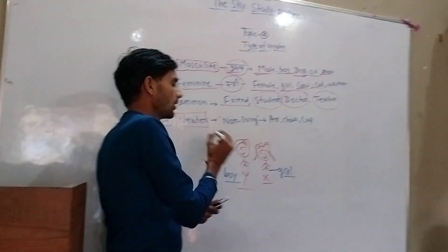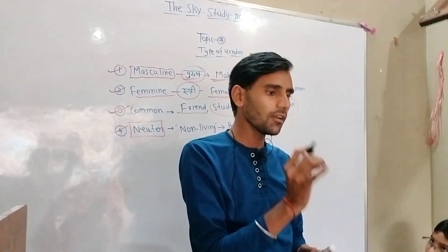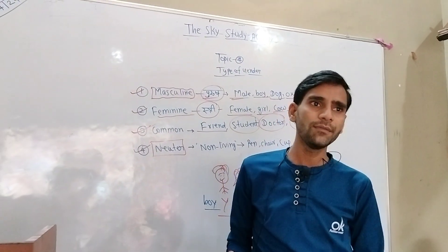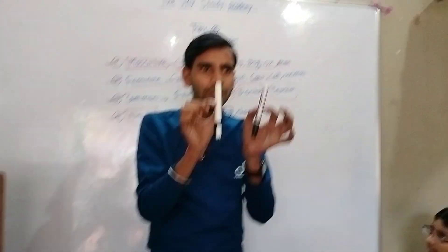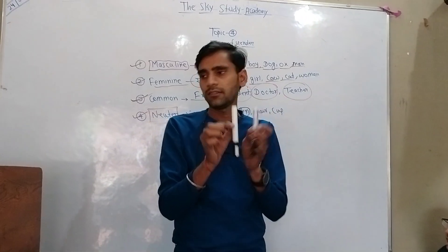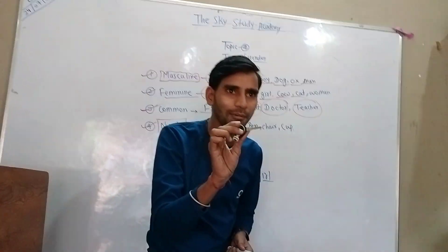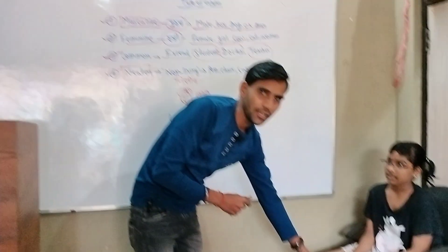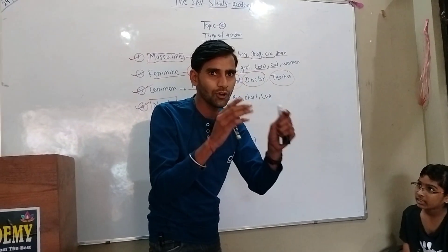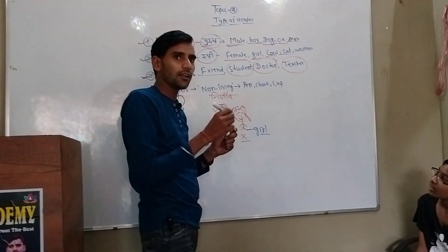Neuter gender refers to non-living things. That is known as neuter gender. In simple words, living or non-living? Non-living. For example: a key — living or non-living? Non-living. A table — living or non-living? Non-living. Pen, chair, cup, table — all non-living things belong to neuter gender.